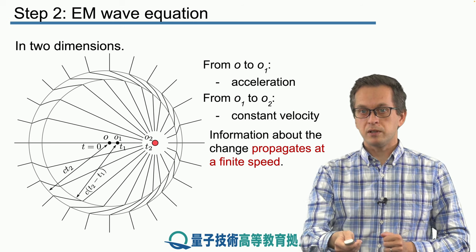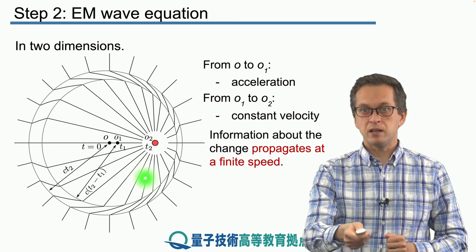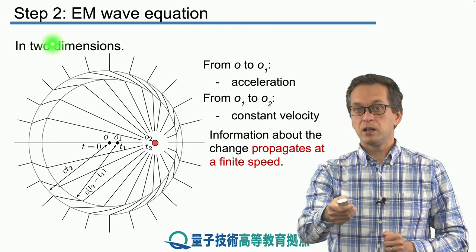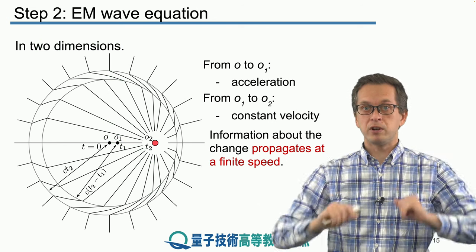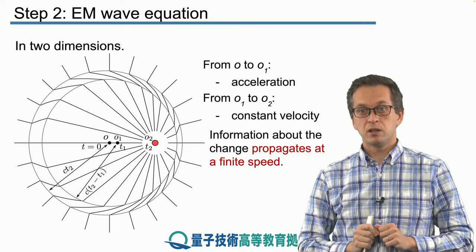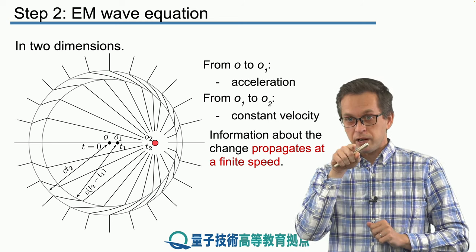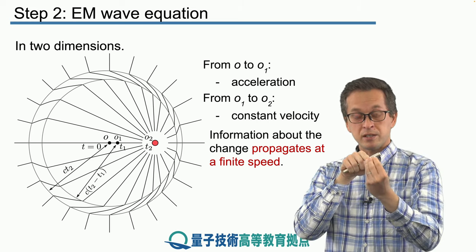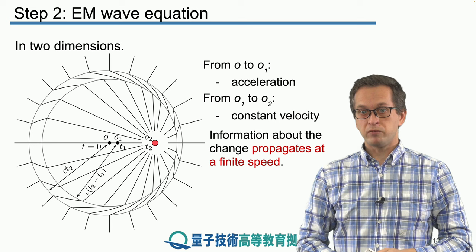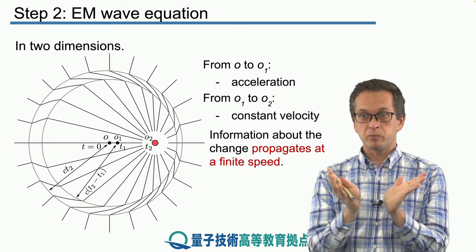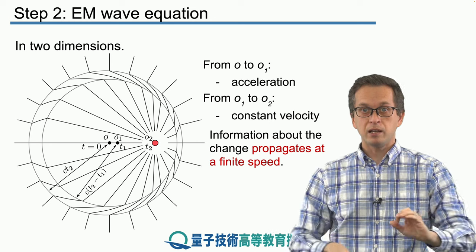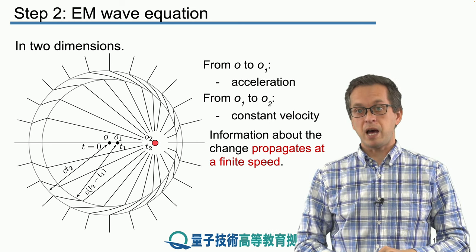Notice that this pulse or kink is produced only when the charge is accelerating — there are no kinks while the charge moves at constant speed. Also notice that the biggest kink occurs for field lines in the direction orthogonal to the charge's acceleration. If you are looking directly at the charge as it accelerates towards you, you see no electromagnetic wave. All electromagnetic waves are produced in a cone upward and a cone downward, but not along the line in which the acceleration occurred.